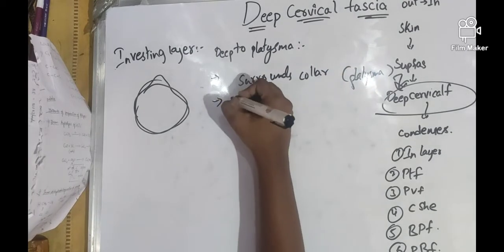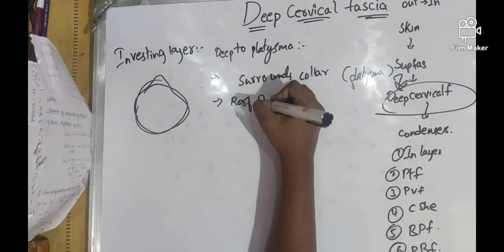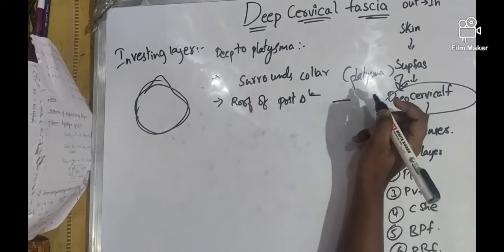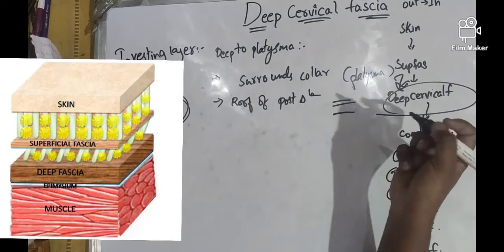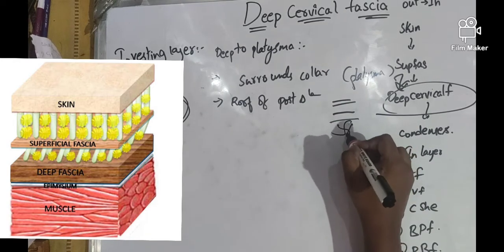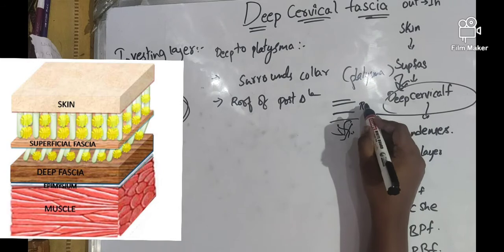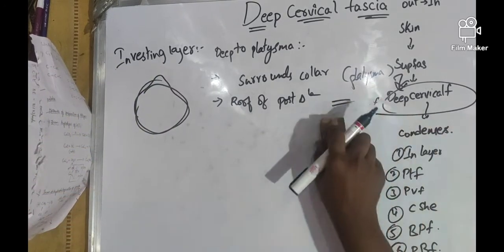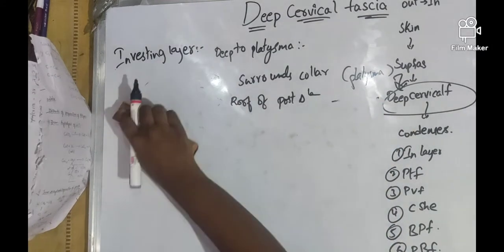It forms the roof of the posterior triangle. Because outside is skin, superficial fascia, deep cervical fascia, and we can see the muscles and nerves below. So it forms the roof of the posterior triangle and anterior triangle also.